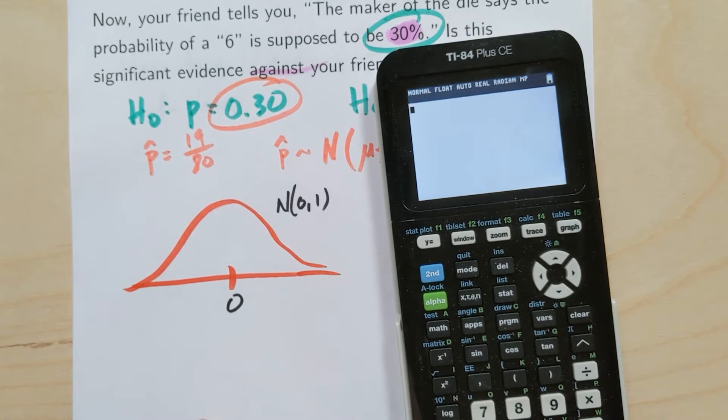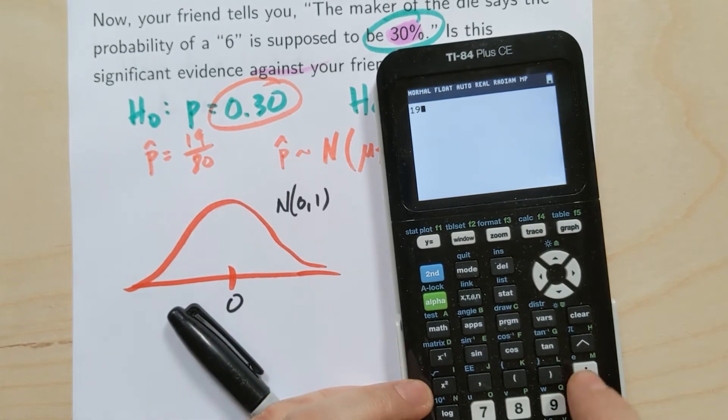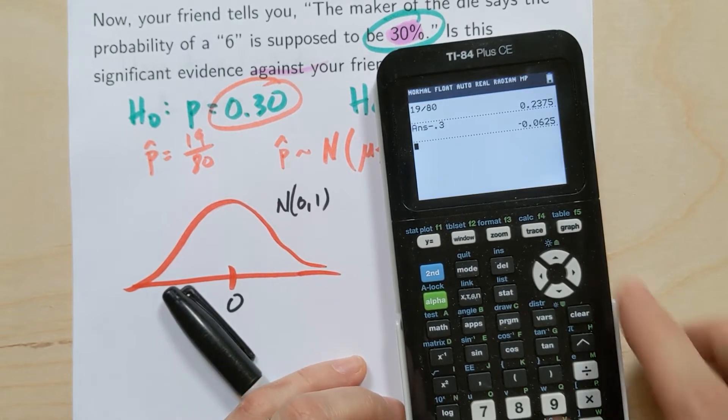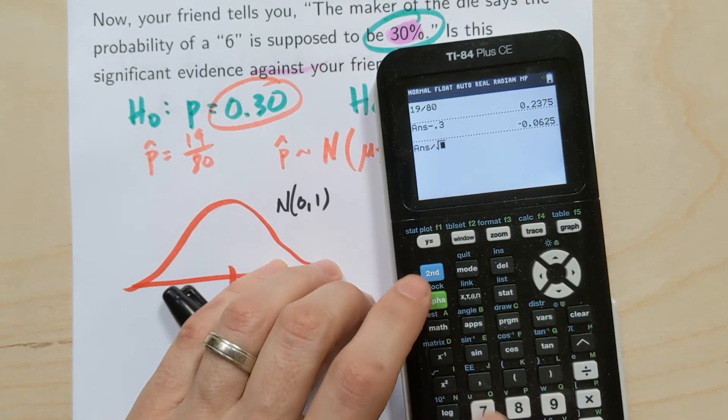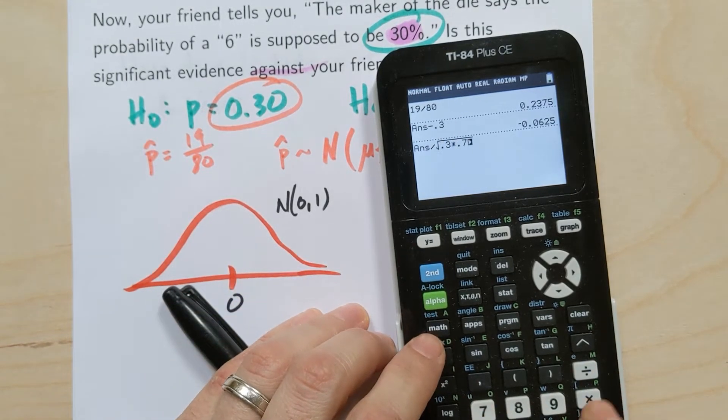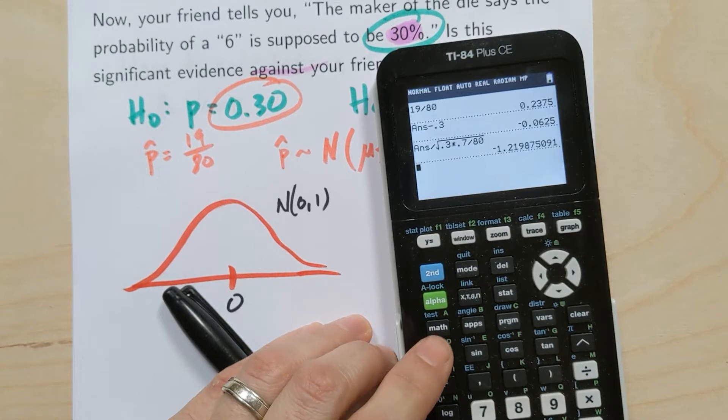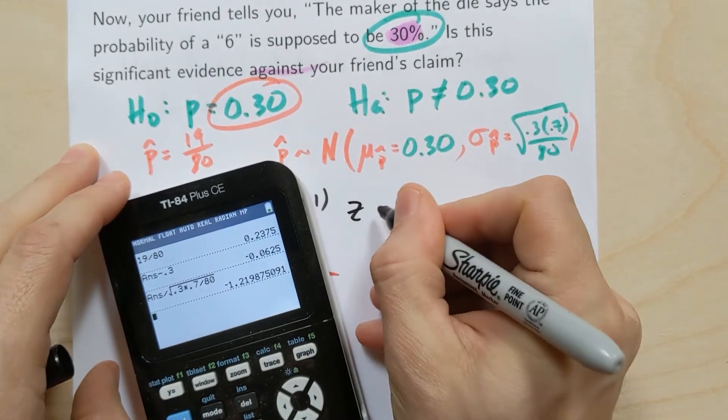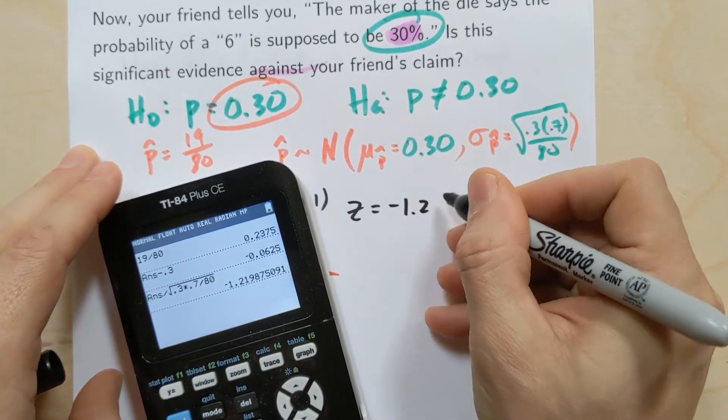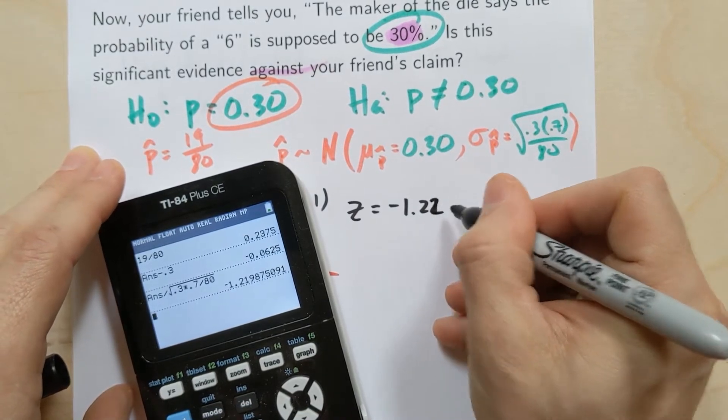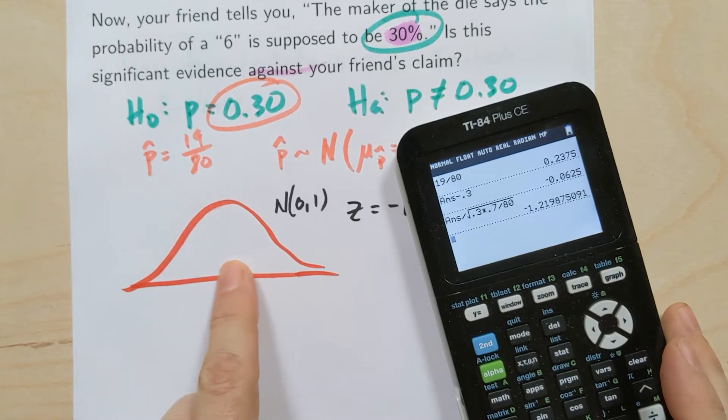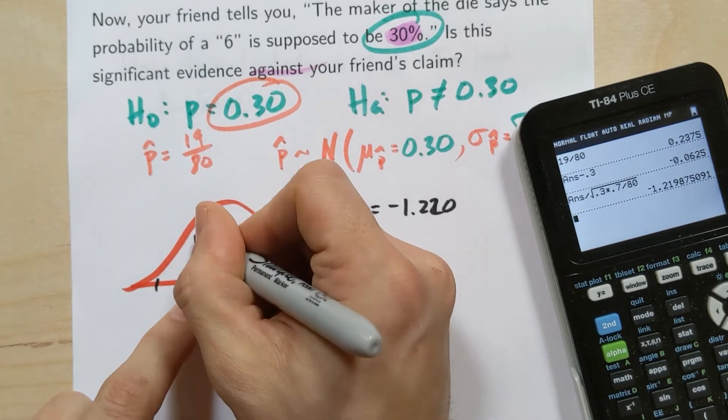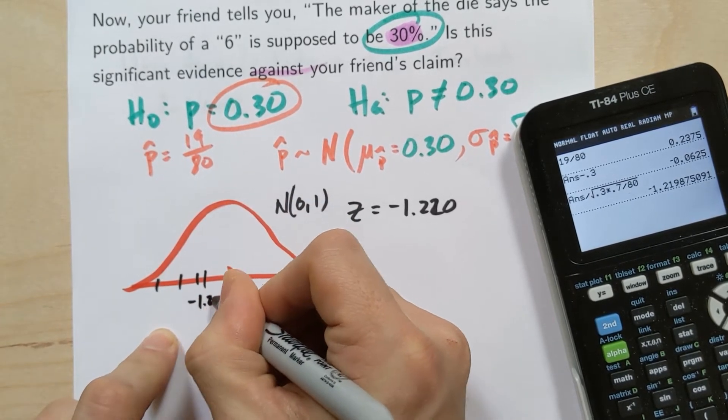And this time, if I notice, it looks like the P hat is actually less than, remember 19 divided by 80 was 0.2375. So I'd subtract that from 30, which is a negative value. And we'll divide that by the square root of 0.3 times 0.7 divided by 80. And that gives me a Z score of negative 1.20 if I round everything in a logical way. So that would be down this way. Remember we have about three standard deviations away from the mean gets close to the edge. So negative 1.20 would be right about there.